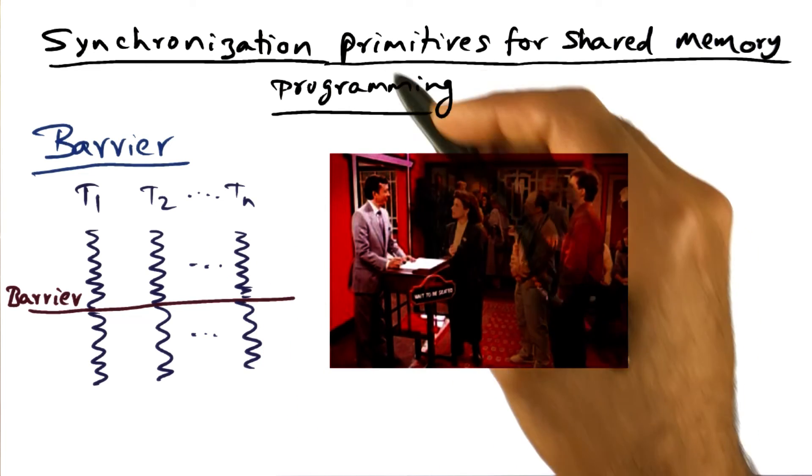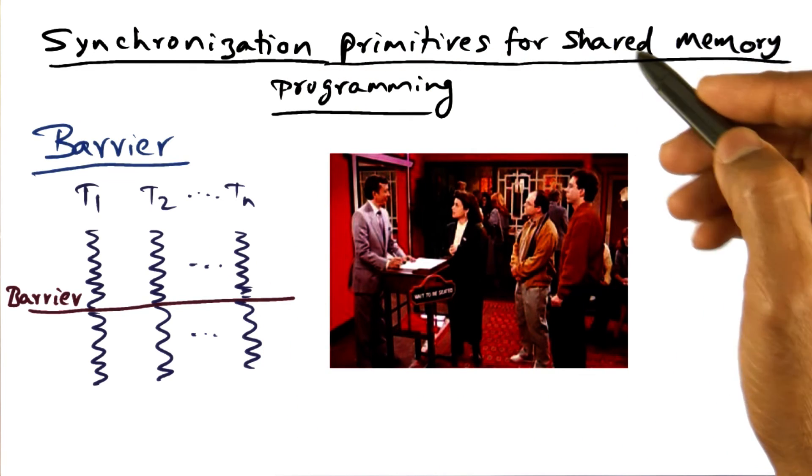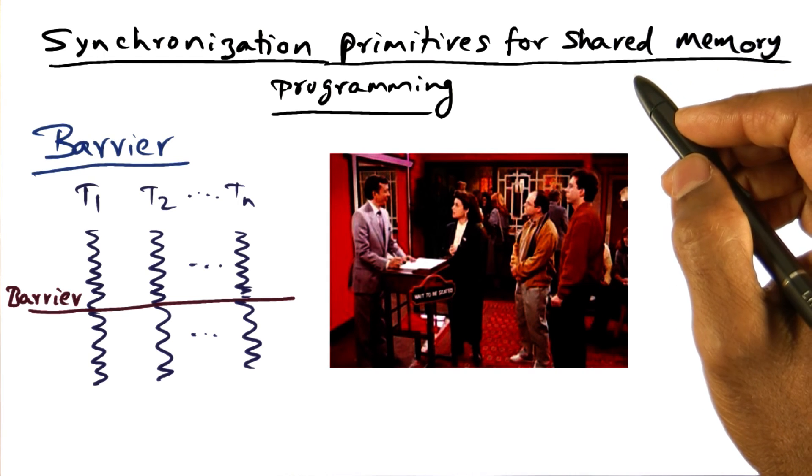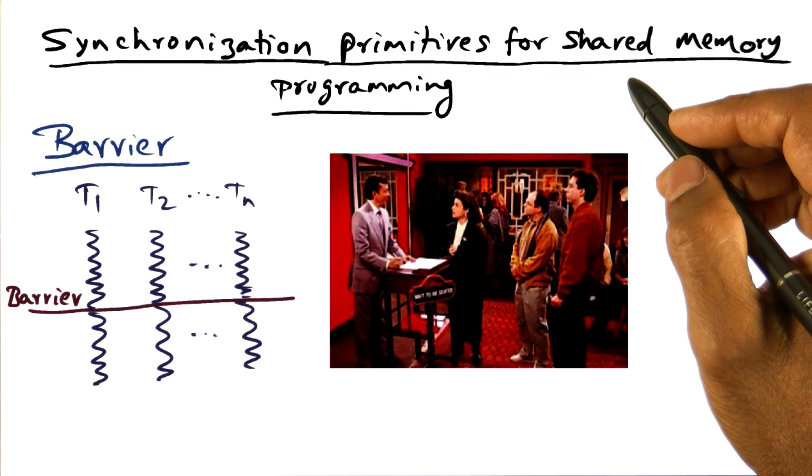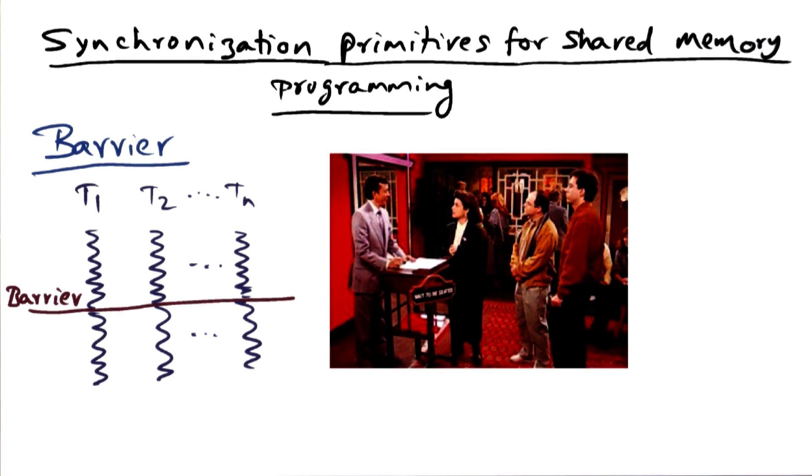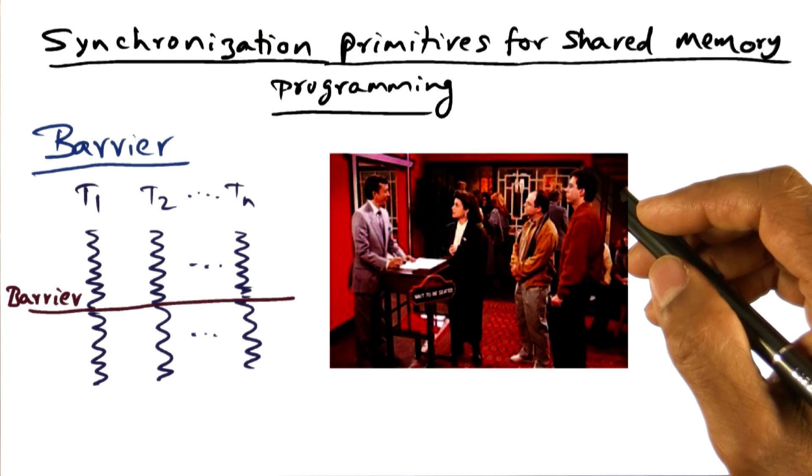Now that we understand the basic synchronization primitives that are needed for developing multithreaded applications on a shared memory machine, it's time now to look at how to implement them. But before we do that, let's do a quiz to get you in the right frame of mind.